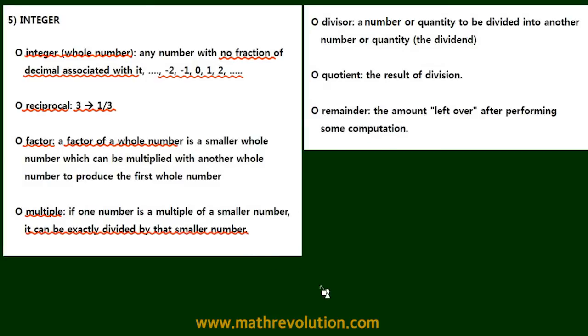A multiple: if one number is a multiple of a smaller number, it can be exactly divided by that smaller number. So factors and multiples are like opposite terms.